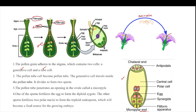The embryo sac is present inside the ovule. In the embryo sac, eight cells are present: three antipodals, two polar cells at the center, two synergids, and one egg cell.